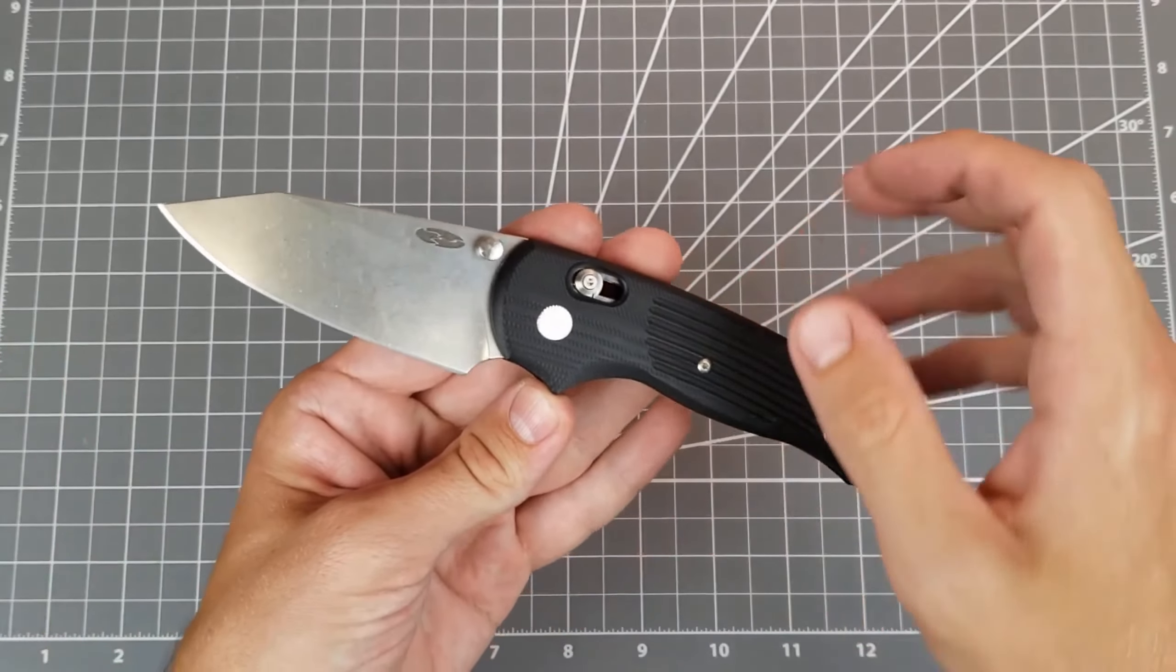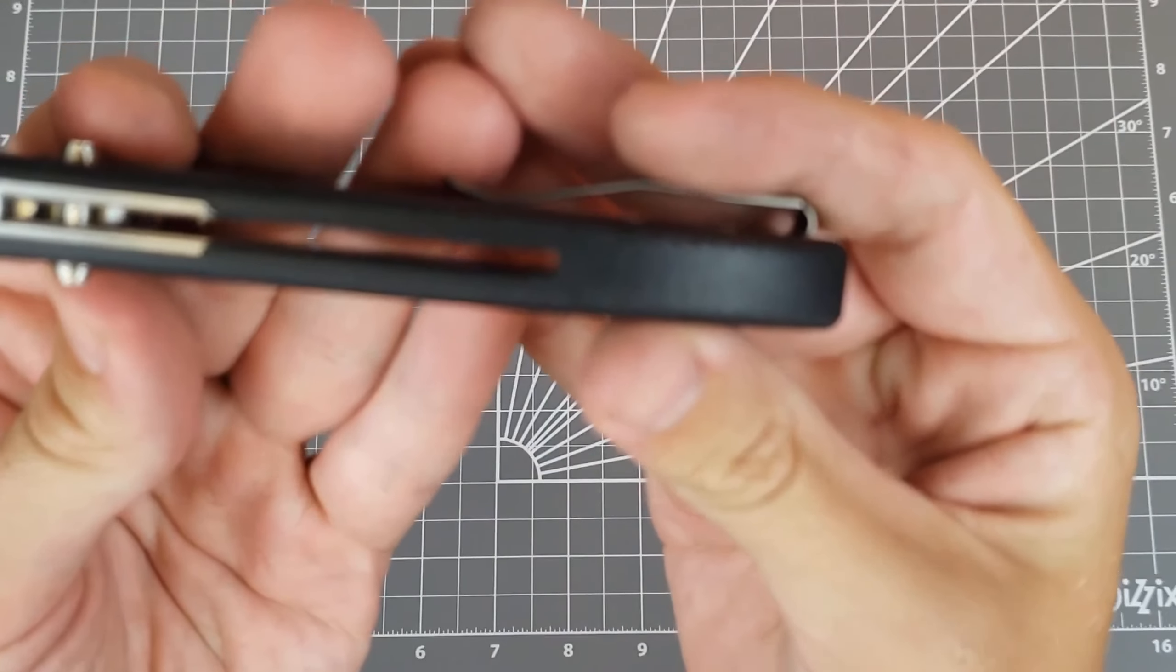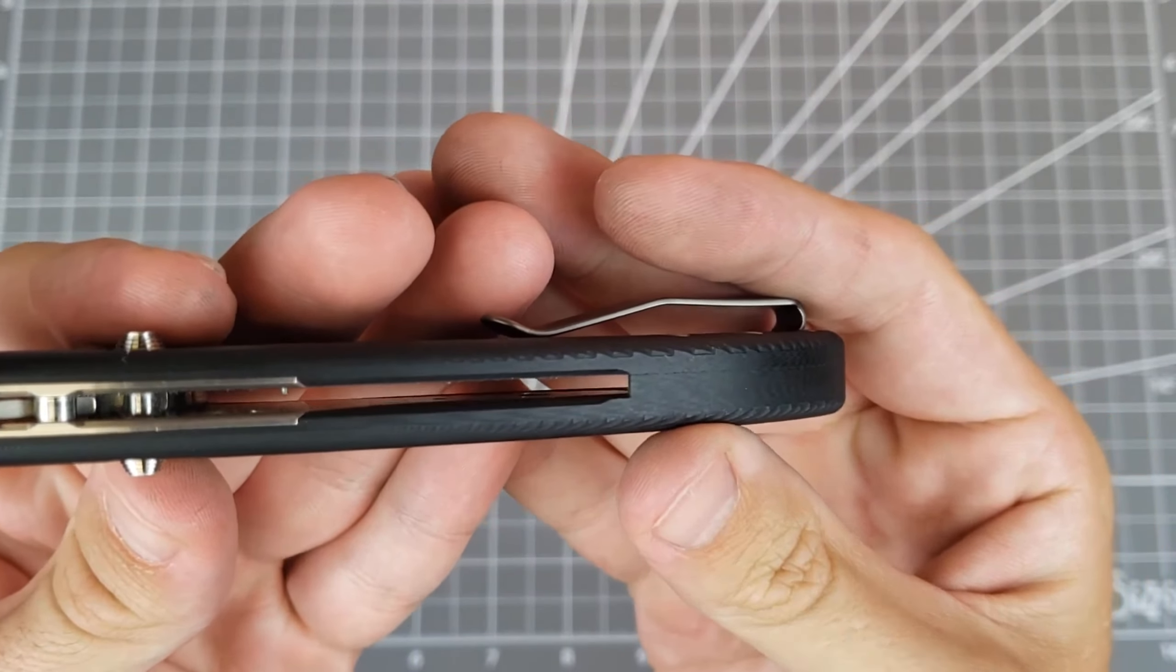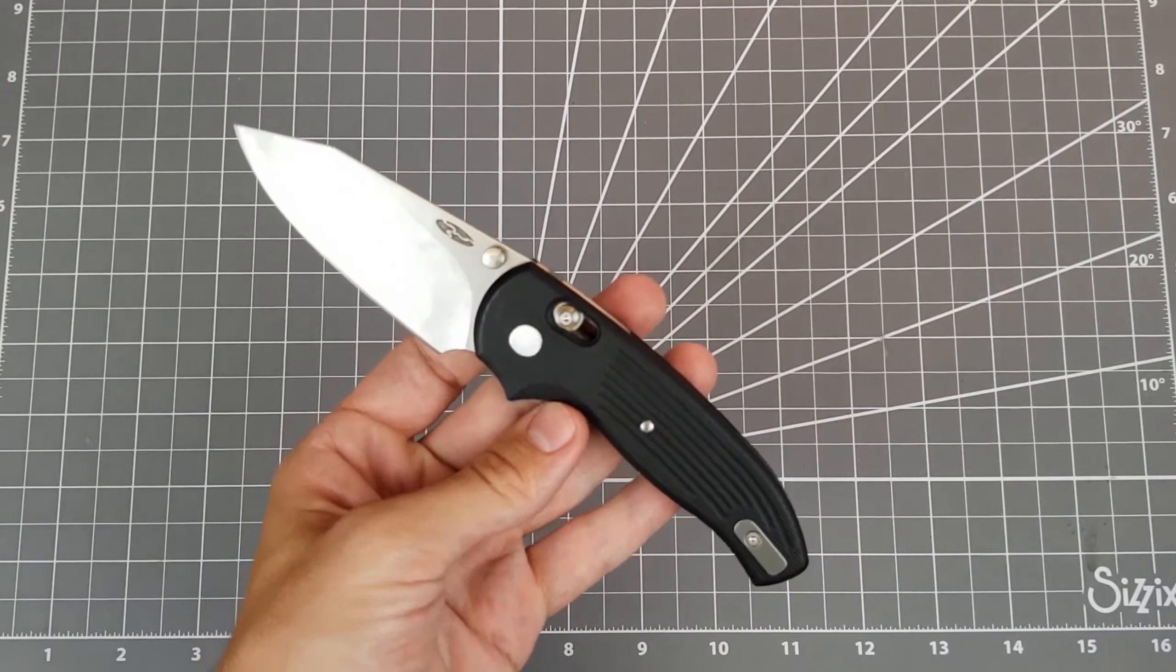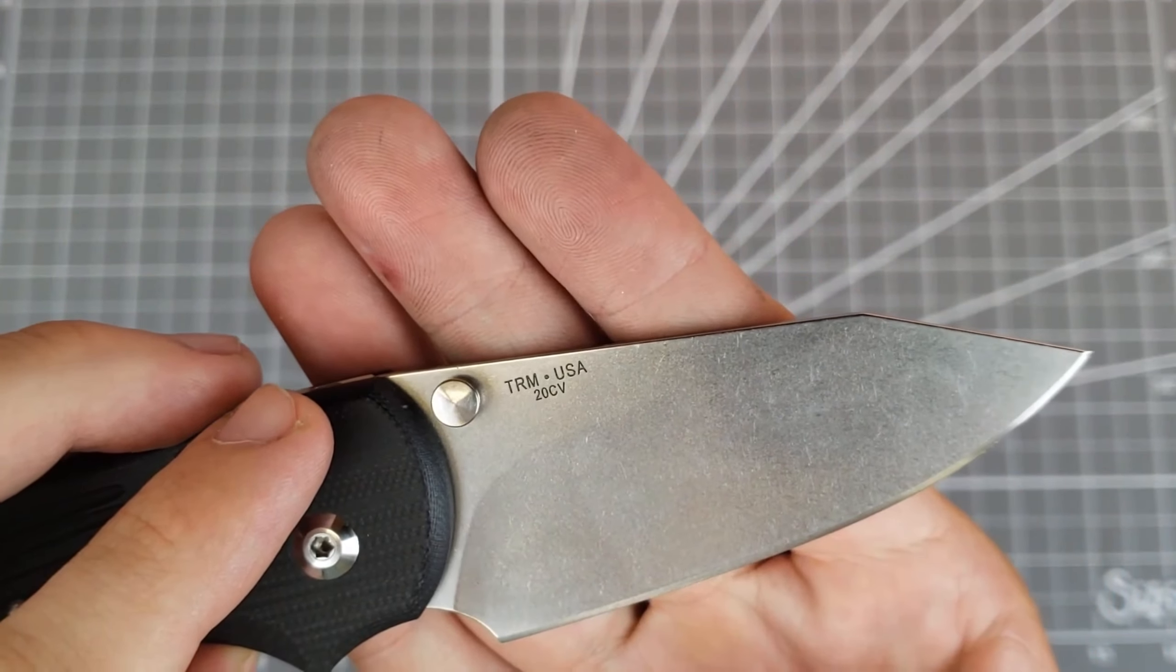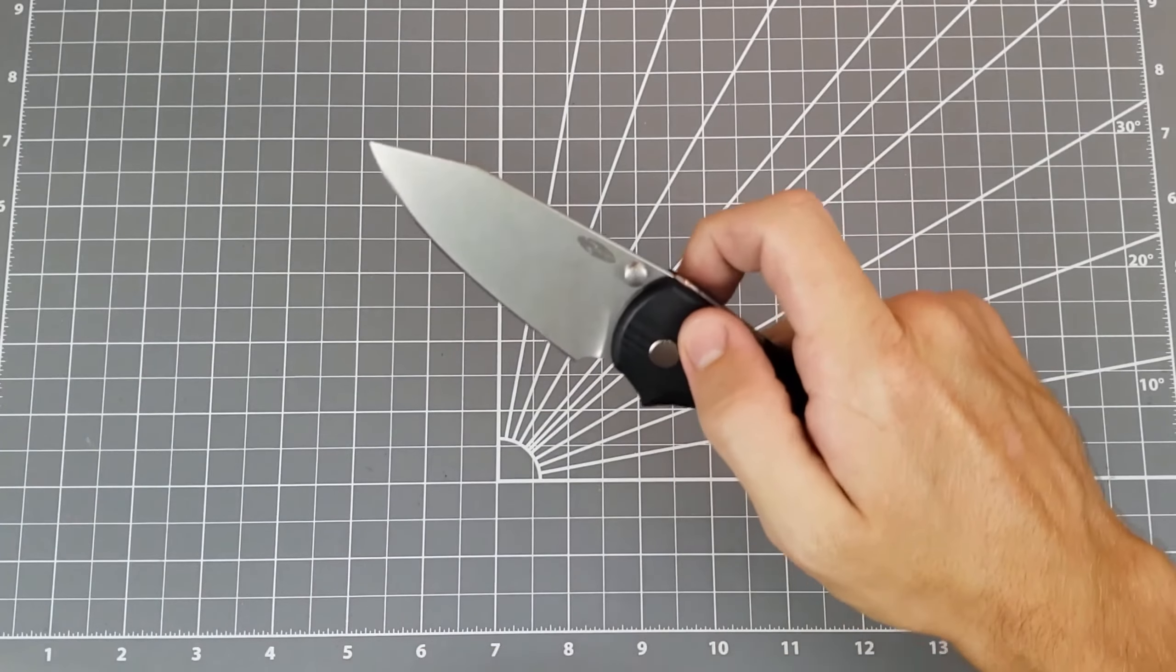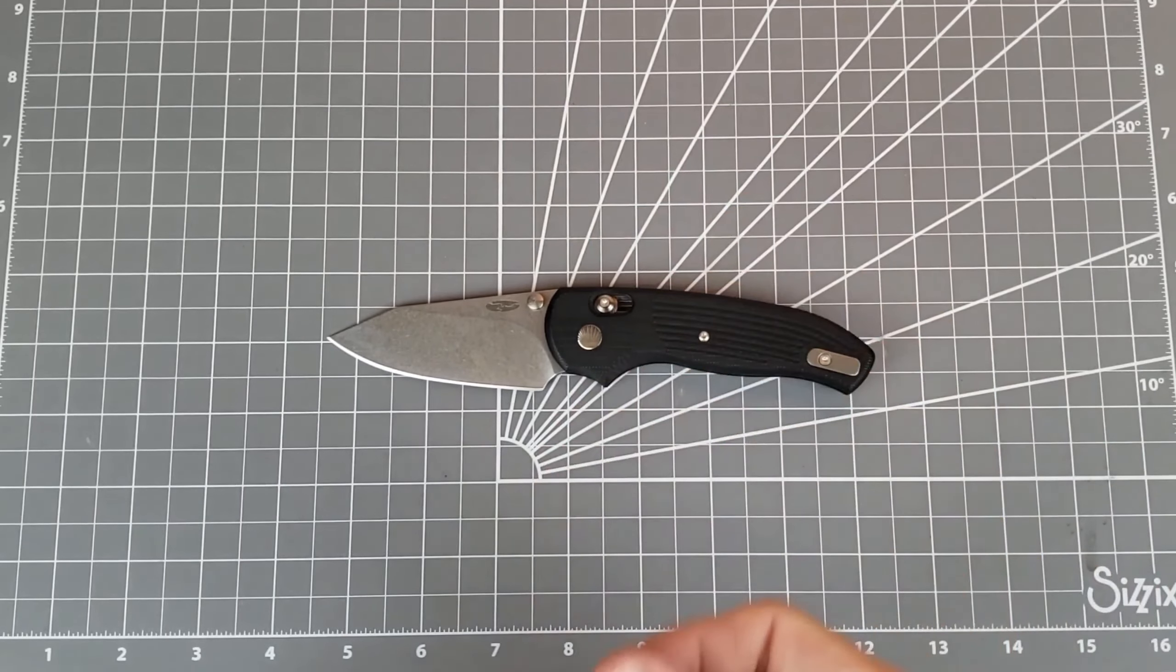Materials on this, we're looking at G10 handles, milled and contoured, integral G10 backspacer, it's part of this show side scale, titanium pocket clip, hardware is stainless steel I believe. And then on the blade, we're looking at 20 CV. And our lock type here, we have this axis style, I think they call it the river lock, pretty much a sliding bar axis style lock.